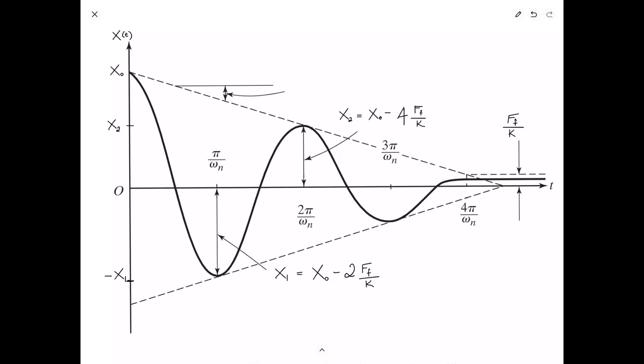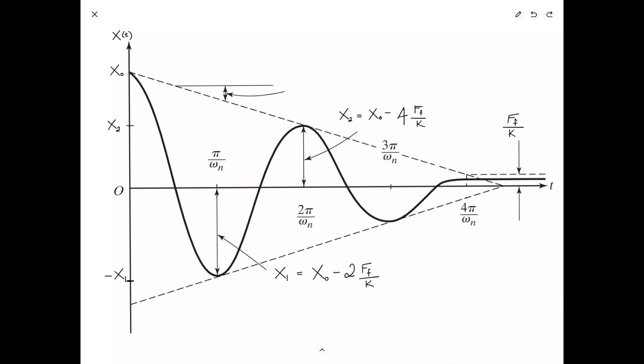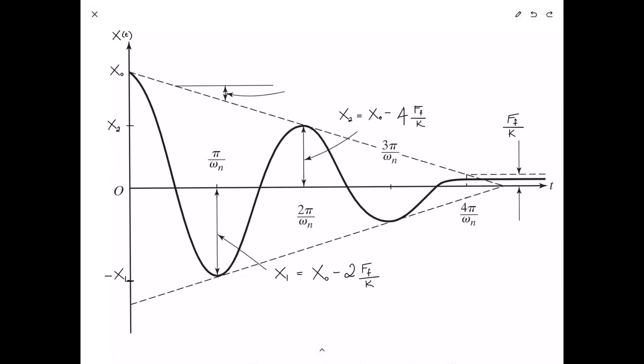It's also worth noting the slope of this curve. Over a period of two pi over omega_n in time, the amplitude decreases by four F sub F over K. Dividing rise by run gives a slope of negative two F sub F omega_n over K pi.